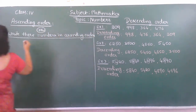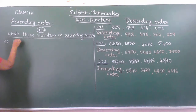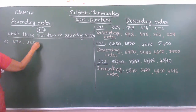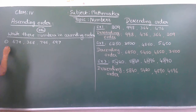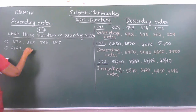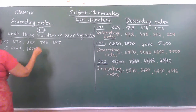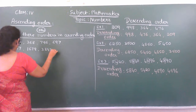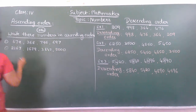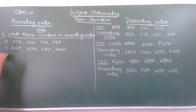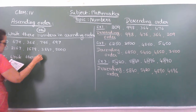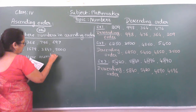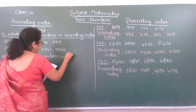Write these numbers in ascending order. First one: 679, 368, 796, 697. Second one: 2167, 1679, 3847, and 5000. That is the first part. Second part: write these numbers in descending order.